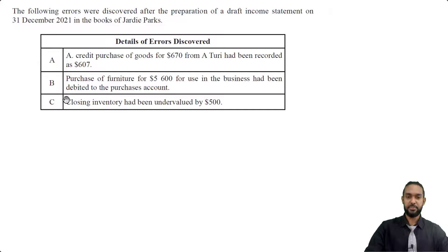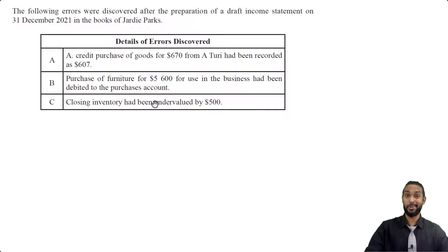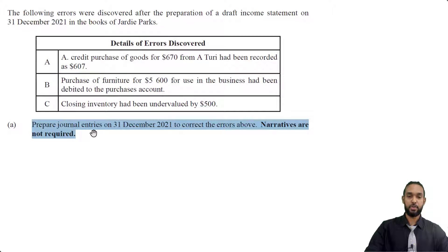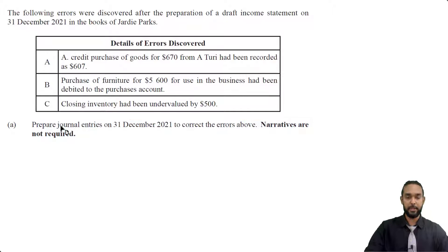So those first two won't affect the trial balance. But closing inventory had been undervalued by $500 — that's a wrong amount in one account, so that's going to affect the trial balance and will require the suspense account. Now, what do they want us to do? Prepare journal entries on 31st December 2021 to correct the above errors. Narratives are not required.